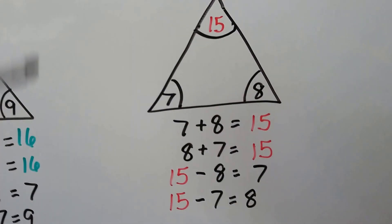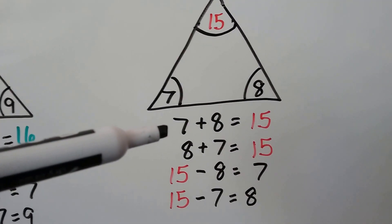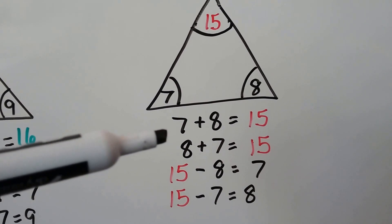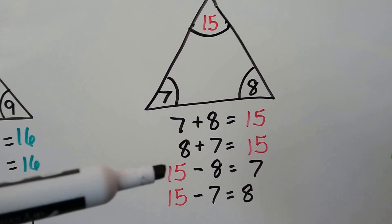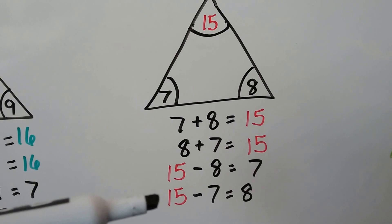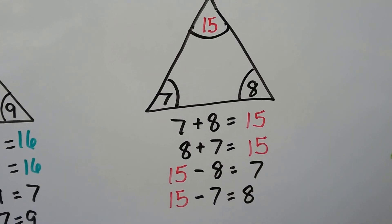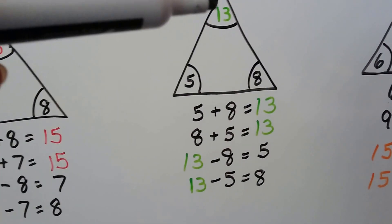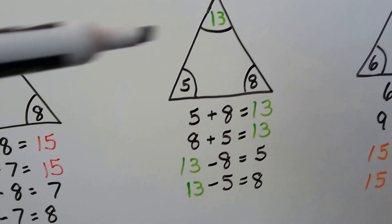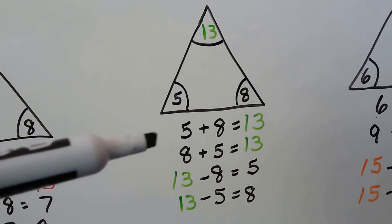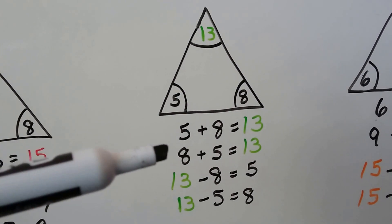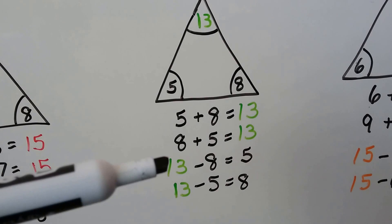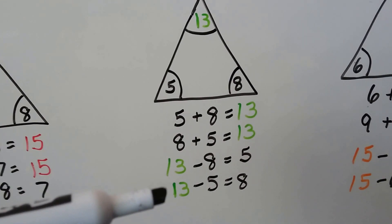For 15, we have a 15, a 7, and an 8: 7 plus 8 equals 15, or 8 plus 7 equals 15, then 15 minus 8 equals 7, or 15 minus 7 equals 8. For 13, we have a 13, a 5, and an 8: 5 plus 8 equals 13, or 8 plus 5 equals 13, then 13 minus 8 equals 5, or 13 minus 5 equals 8.